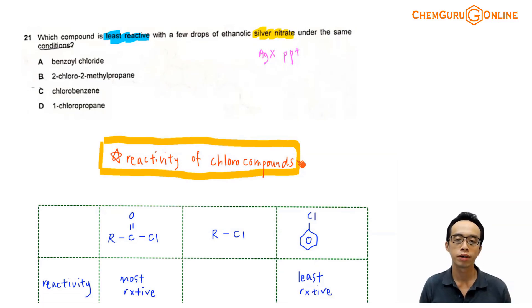Hi everyone, this is Maverick Paul, the chemistry guru. Now in this video, we want to go through the suggested solution for 2020 A-levels H2 chemistry, paper 1, question 21.